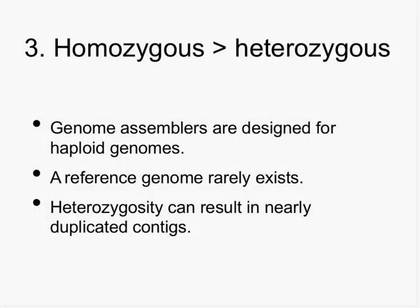Homozygous is better than heterozygous. Genome assemblers are designed for haploid genomes; the original assembly problems were not considering diploid genomes. The first complex eukaryotes sequenced — like Saccharomyces cerevisiae or C. elegans — were genomes that are either haploid or essentially haploid because they're true breeding. When you work with a diploid, the two chromosomes from your mom and your dad are not the same. The reference genome you get doesn't really exist — it's a mosaic that looks like neither parent, and it will be confusing both to the assembler and to downstream analyses.